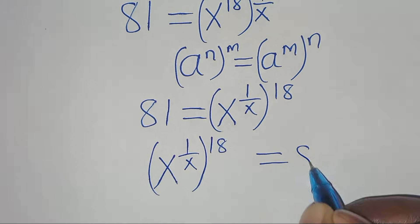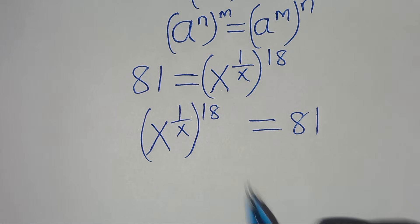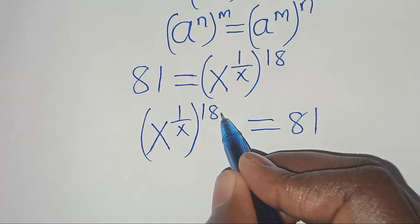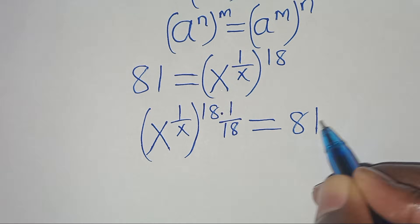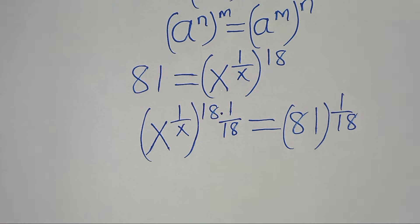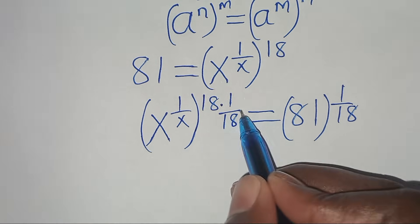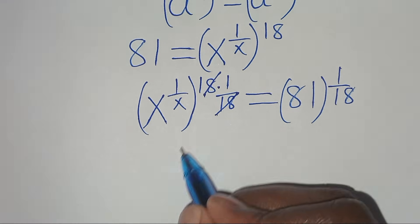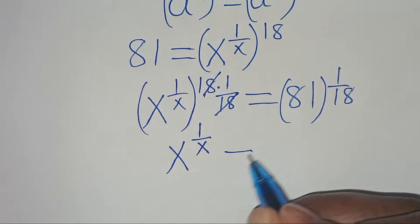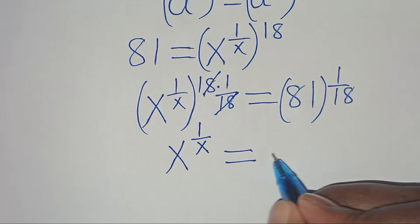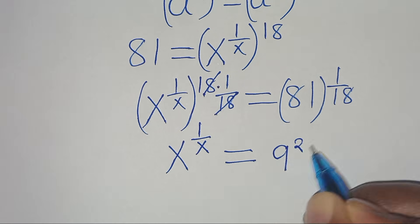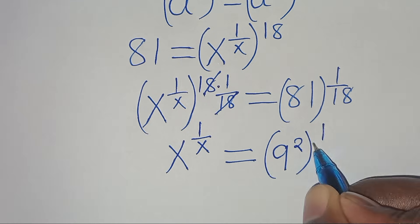So again, let's eliminate this power of 18 here by multiplying both sides by 1 over 18. Also here we have 1 over 18. So let's simplify 18 and 18, so that now we have x to the power of 1 over x. This is equal to 81 to the power of 1 over 18. We can express 81 as 9 to the power of 2, raised to the power of 1 over 18.